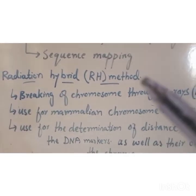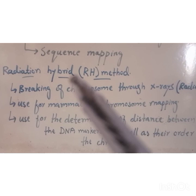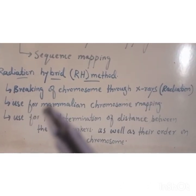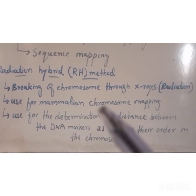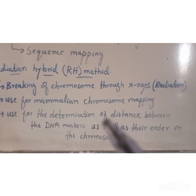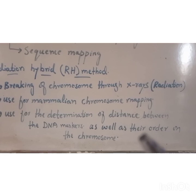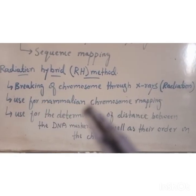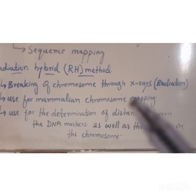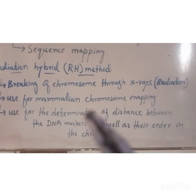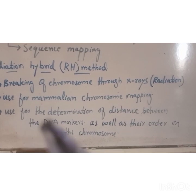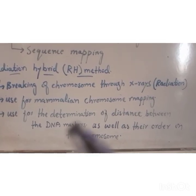The second technique is radiation hybrid mapping. In this method, X-rays are used for the breaking of chromosomes. This technique is mostly used for mammalian chromosome mapping and is used to determine the distance between DNA markers as well as their order on the chromosome. Radiation hybrid method में X-rays से chromosome की breaking होती है और DNA markers के बीच distance और उनका order determine किया जाता है।